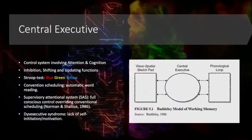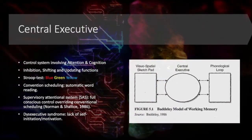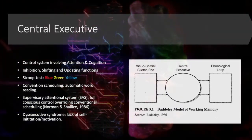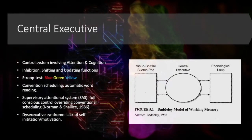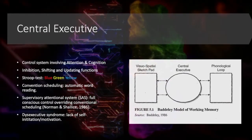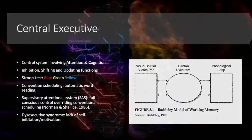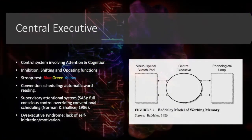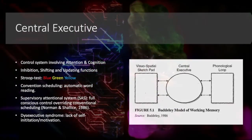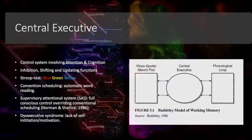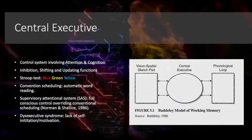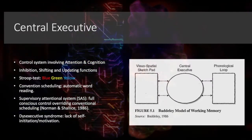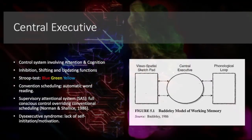Supervisory attentional systems. This was discovered by Norman and Shallice in 1986, whereby there is full conscious control that selects certain action schemas and helps to override convention schedules. This uses the full range of the central executive — inhibiting, shifting, and updating functions — to override this convention schedule, which is almost second nature to us.